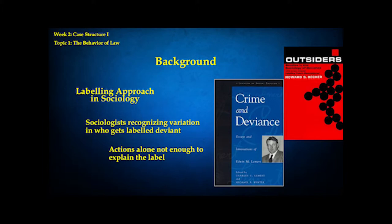Sociologists began to recognize that there's a lot of variation in who gets labeled deviant, and you can't explain all this variation with people's conduct. Some people steal but never get called thieves, never get convicted of a crime. Other people might be falsely accused — they've never stolen or killed, but they still bear the label of killer and thief.